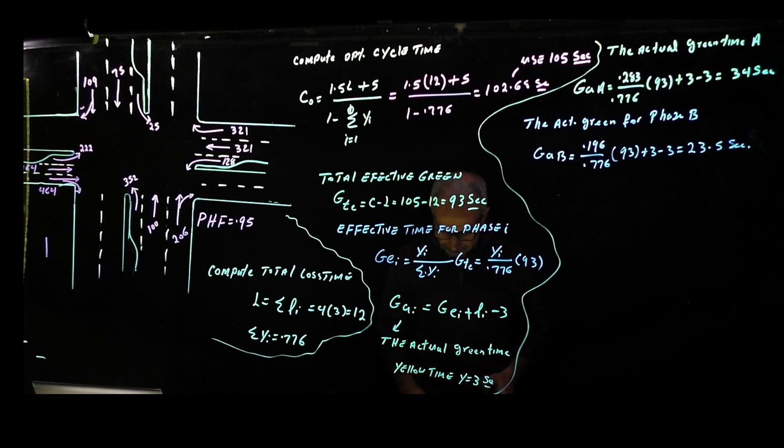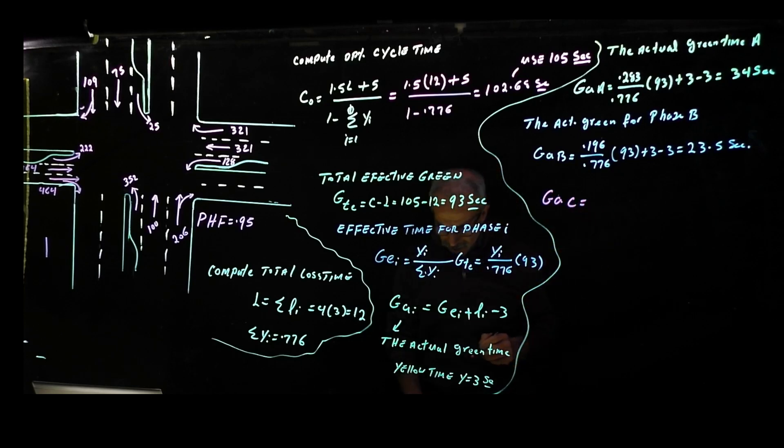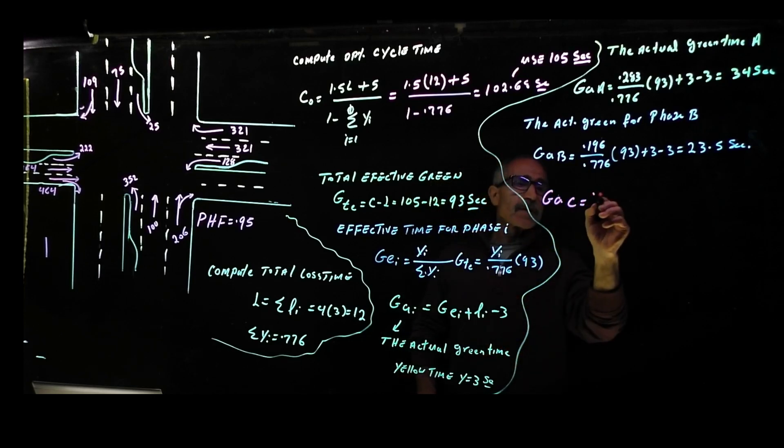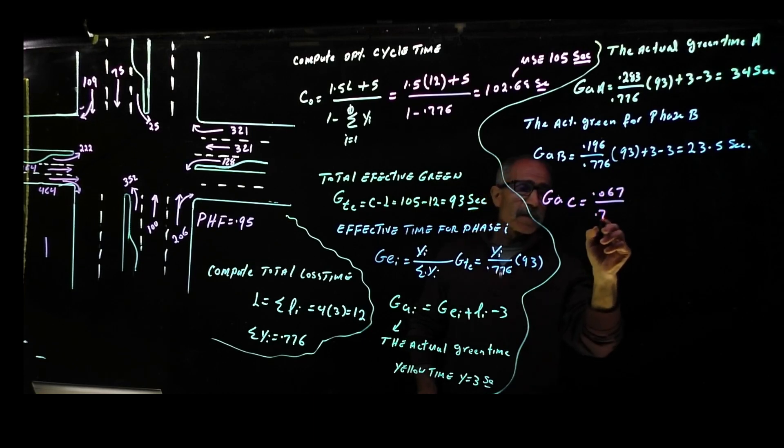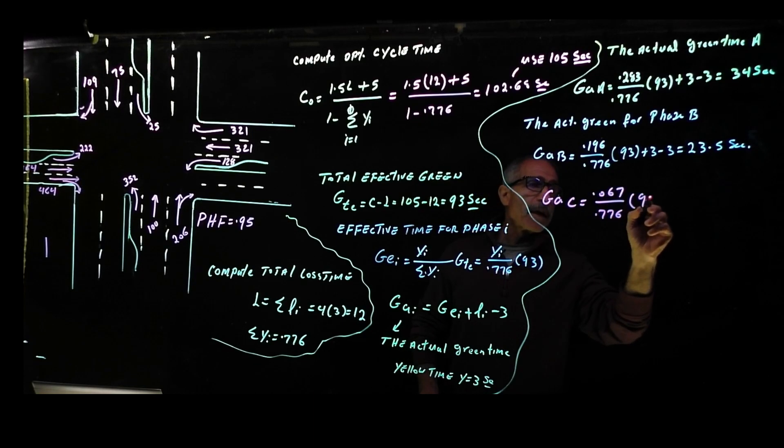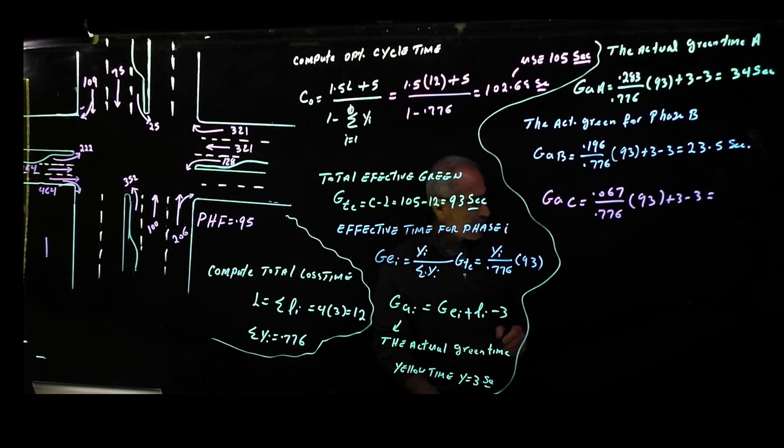We're going to do the same thing for phase C, and that will be 0.0767 divided by 0.776 times 93 plus 3 minus 3, and that will give us 8 seconds.